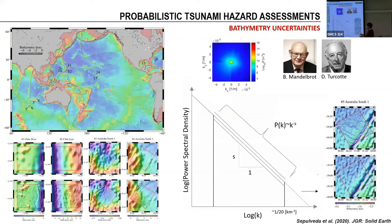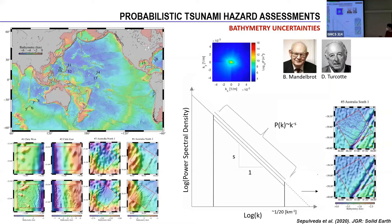Now I will show what I did in 2019–2020 as part of my postdoc research: how to include the uncertainty of bathymetry in probabilistic tsunami hazard assessment. Mandelbrot came up with the idea of self-similarity of fractals, and Donald Turcotte did a lot of work in geology at Cornell, defining the concept of geofractology — fractals applied to geology. From those studies, the common finding was that if we observe the topography or seafloor topography (bathymetry), we see a fractal behavior expressed as a power-law decay when plotting the power spectral density of the topography field.